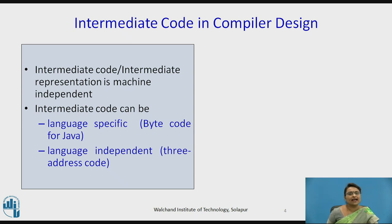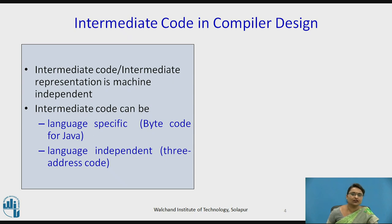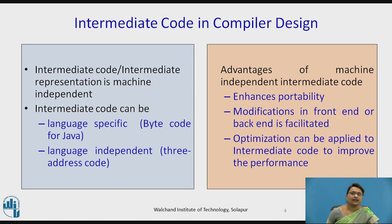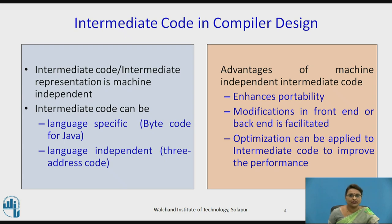Intermediate code can be language-specific or language-independent. For language-specific, you can take bytecode in Java as an example, and for language-independent, one of the forms is called three-address code. We will be seeing soon what these codes are. The advantage of machine-independent intermediate code is that portability is enhanced because it is not dependent on any particular machine.